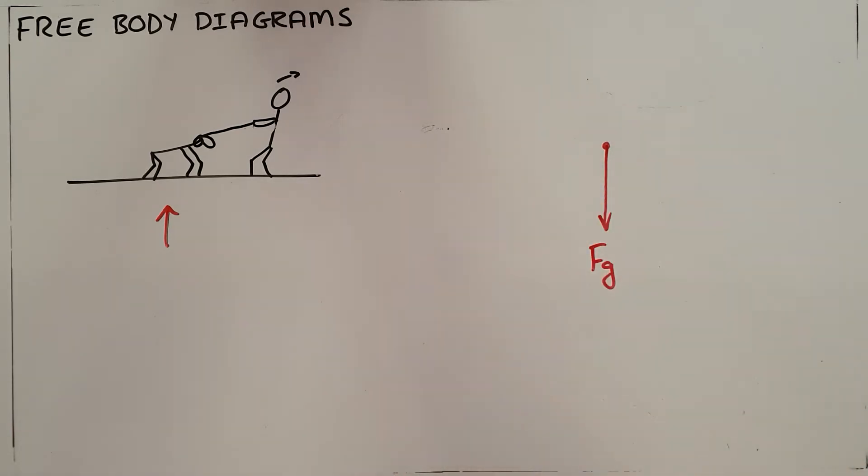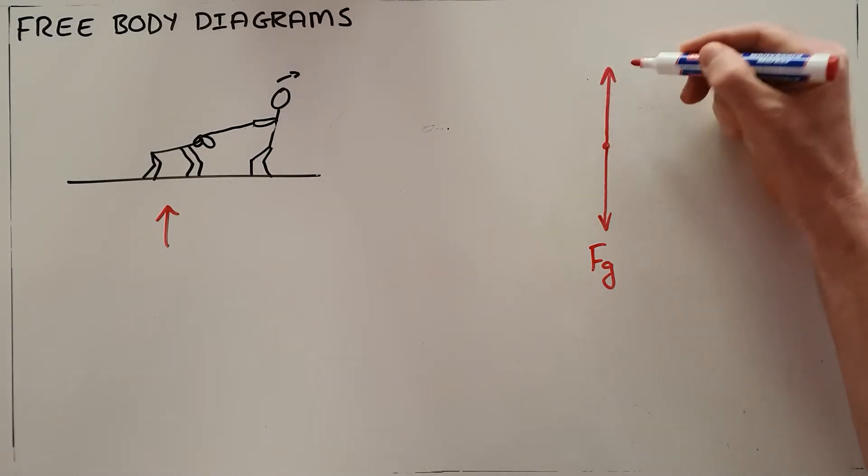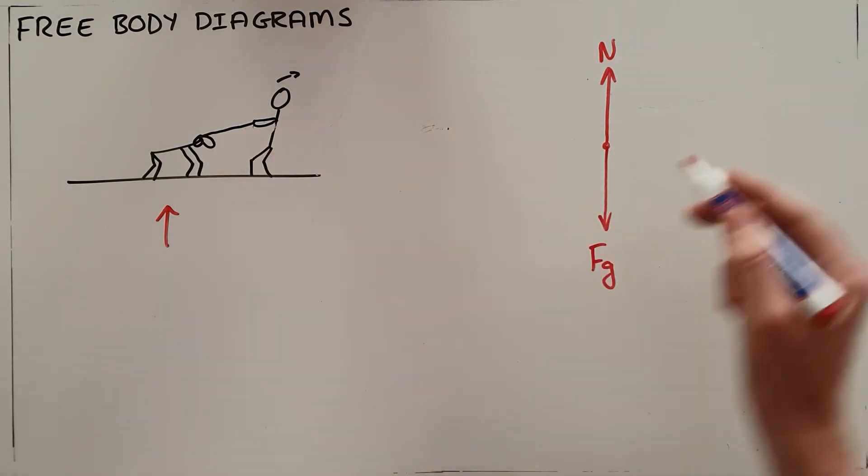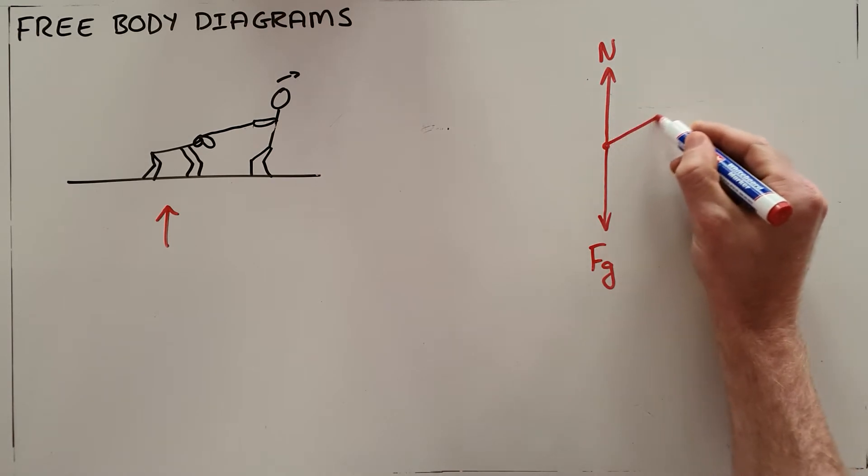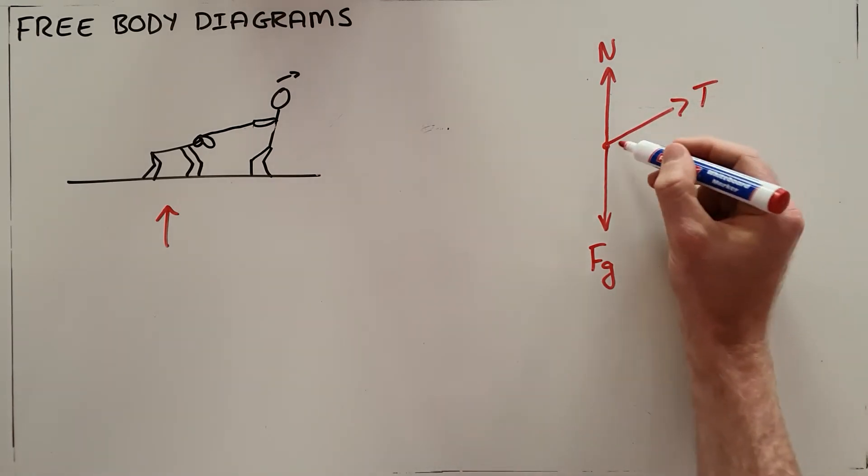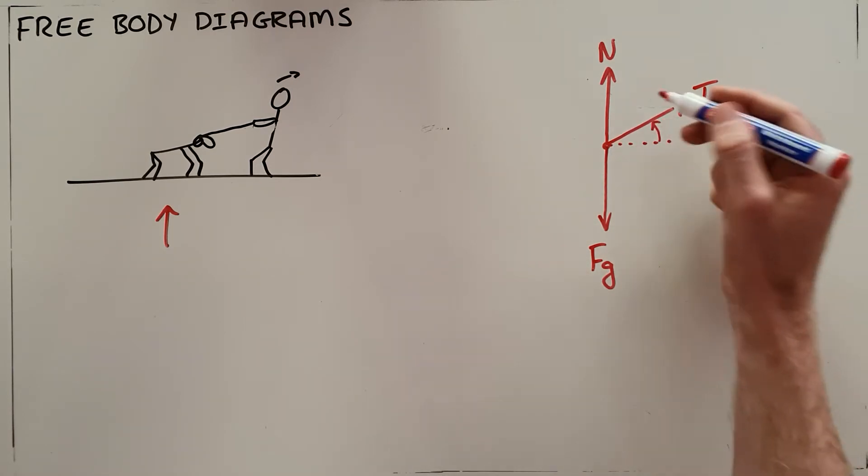We also know that since this dog is standing on the ground, there is going to be a normal force that the ground exerts upward on this object. Then we can see that there is a tension force, the force that the leash is exerting on that object, acting at some angle. We are allowed to indicate that angle if it is known in this diagram.